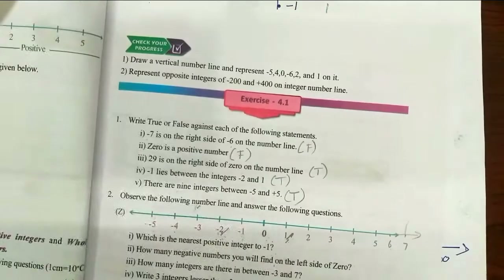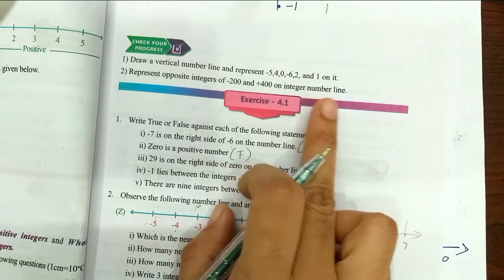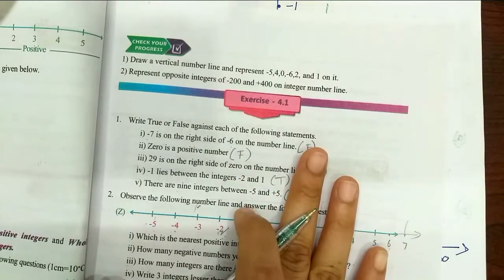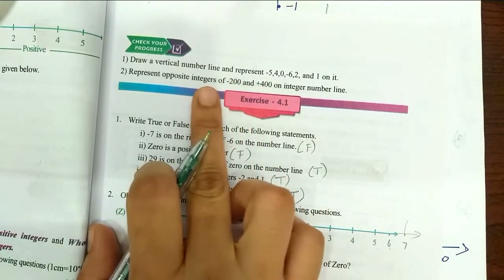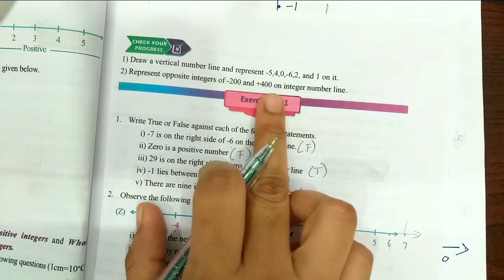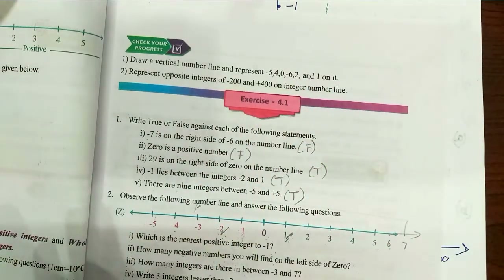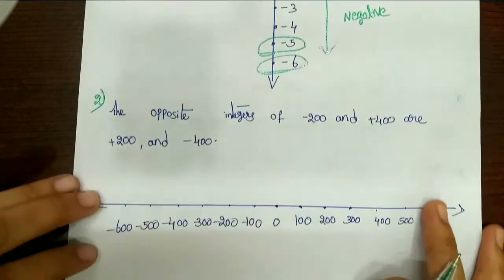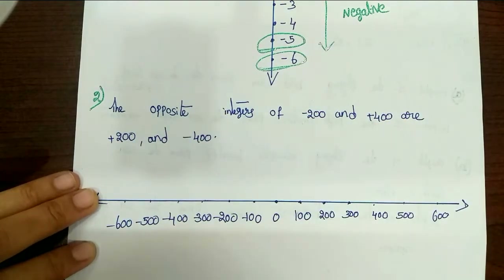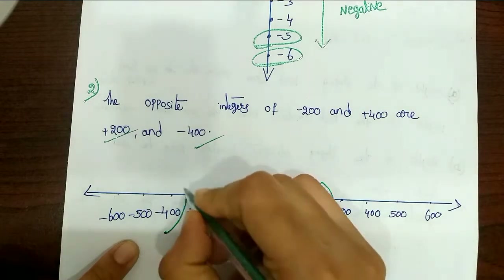Second part: represent opposite integers of minus 200 and 400 on an integer number line. The opposite of minus 200 is plus 200, and the opposite of plus 400 is minus 400. So we mark plus 200 and minus 400 on the number line — these are the two opposite integers.